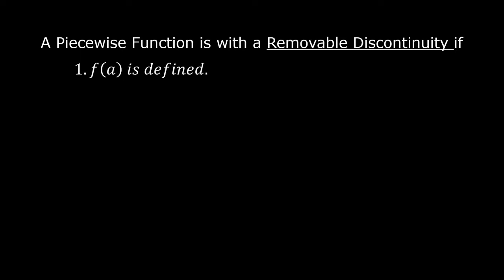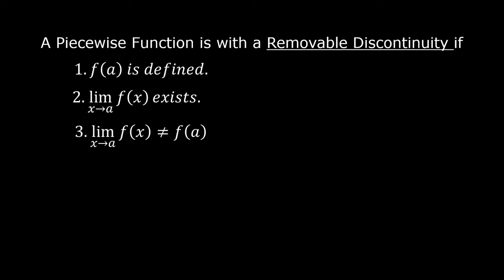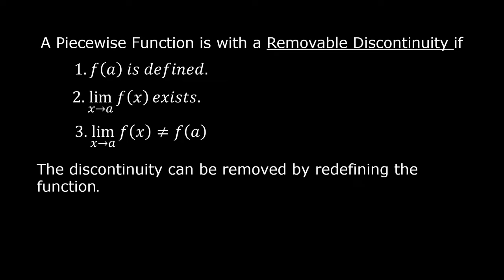A piecewise function has a removable discontinuity if: number one, f of a is defined; number two, the limit of f of x as x approaches a exists; and number three, the limit of f of x as x approaches a is not equal to f of a. The discontinuity can be removed by redefining the function.